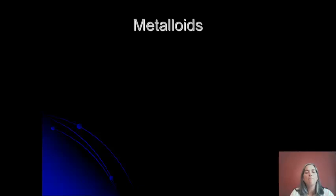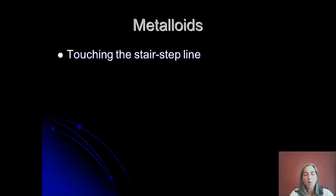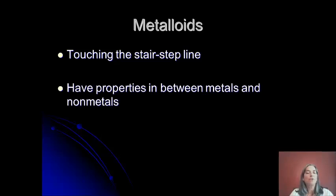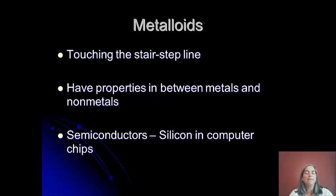The last category is the metalloids — elements that touch the stair-step line on a side, not on a corner. Note that aluminum touches the stair-step line on a side but is not a metalloid; it is a metal. The other exception is polonium at the bottom. Metalloids have properties in between metals and nonmetals — they might be shiny and somewhat malleable, but not as malleable as a metal. Typically, some of these elements are also semi-conductors: they conduct electricity but not as well as a metal. They're used in things like computer chips, which makes them really interesting.